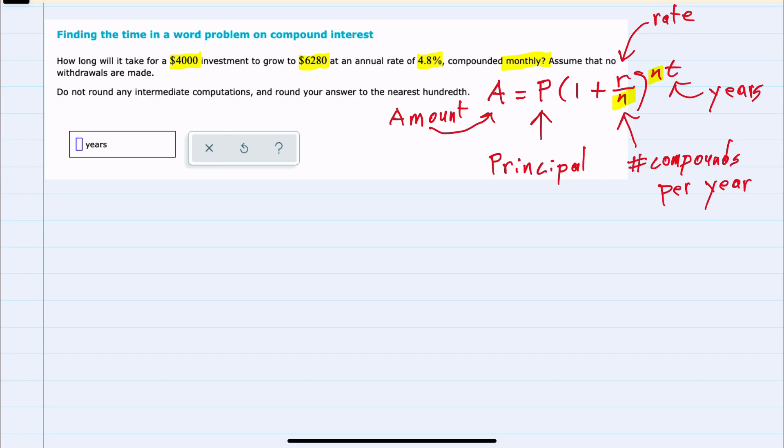So, substituting in our values, we know that the final value A after some amount of time is $6,280, which equals P, the initial principal...